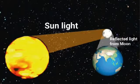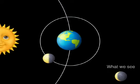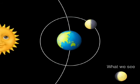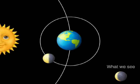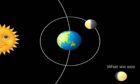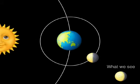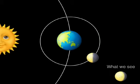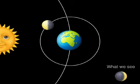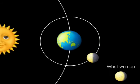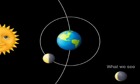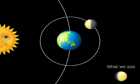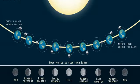Without the sun our moon would be completely dark. The sun's light comes from one direction and it always lights up one half of the moon — the side of the moon that is facing the sun. The other side of the moon is dark.